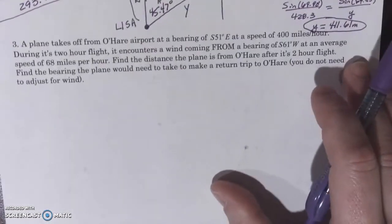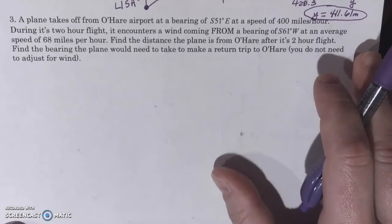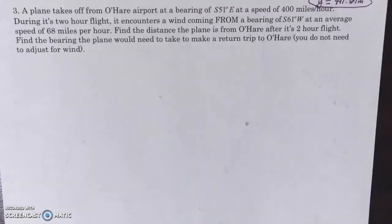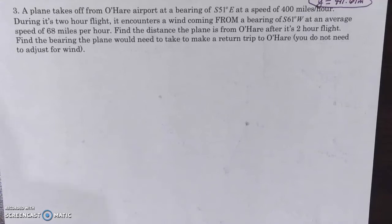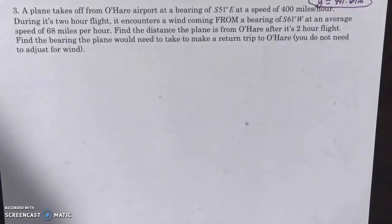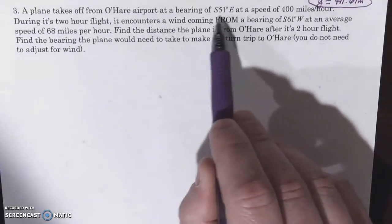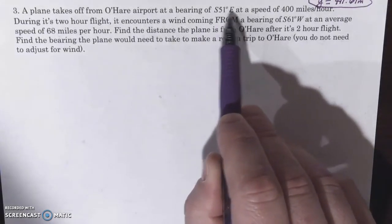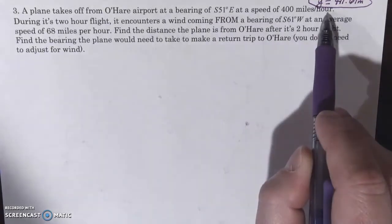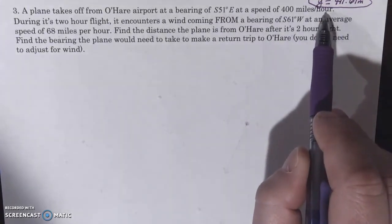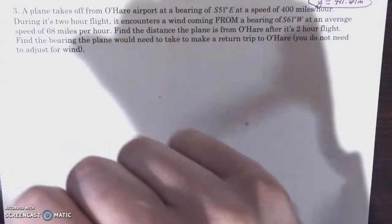Lastly, let's get on to number three. We're going to talk about a plane going on a trip and then wind as well, a wind speed. This would be the same if it was a ship traveling on water and encountering a current. So the plane takes off from O'Hare Airport at a bearing of 51 degrees east of south at a speed of 400 miles an hour. So east of south, we're going to be going southeast.